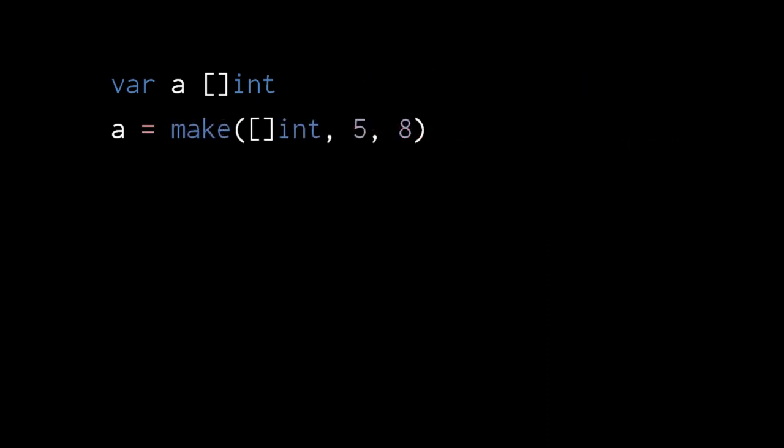To give the slice a non-zero length and capacity, we use a special built-in function make. The first argument to make is not an expression, but rather the type of slice to create. So in fact this built-in function isn't really a function — it doesn't take an expression argument, it doesn't take a value, it's a special syntax that takes a type specification. The second argument specifies the length, and the third argument specifies the capacity. This call to make will create an array of 8 ints somewhere in memory, and then return a new slice value which references that new array. This assignment effectively copies that returned slice value to variable a.